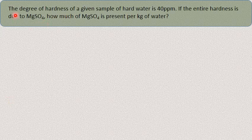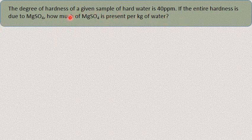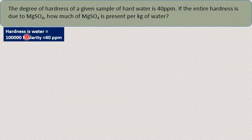Let us take another question. The degree of hardness of a given sample of hard water is 40 ppm, and the entire hardness is due to magnesium sulphate. How much magnesium sulphate is present per kg of water? Use the shortcut method: hardness = 1 lakh × molarity = 40 ppm. Substituting, molarity = 40 ÷ 1 lakh = 4 × 10⁻⁴.